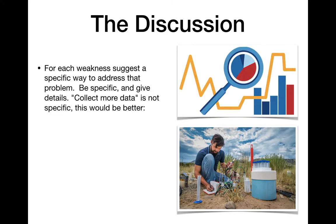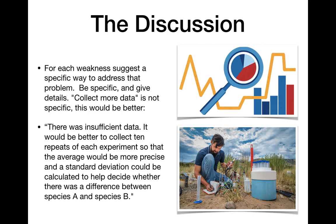Now in your discussion, if you're talking about weaknesses in your discussion, be specific and give details. Please do not say collect more data. Oftentimes not having enough data is a clear weakness of an experiment. But the way to talk about that at the appropriate level for the DP is something more like this. If there was insufficient data, it would be better to collect 10 repeats of each experiment. The average would be more precise and a standard deviation could be calculated to help decide whether there was a difference between species A and species B. Because you give me more information about why you need more data, how much data you need, and how it would make a difference in your experiment. So every weakness, do that. Talk about what the weakness was, talk about why it's a weakness, how you would fix it, and how that would help.